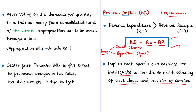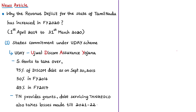One major reason for Tamil Nadu's increased revenue deficit is the UDAY scheme — Ujwal Discom Assurance Yojana. Under this scheme, the state government has taken over the debt and losses of TANGEDCO, the Tamil Nadu Generation and Distribution Corporation Limited. States were asked to take over 75% of their discom debt as on September 30th, 2015, then 50% in 2015-16, and 25% in 2016-17. Tamil Nadu has been providing grants and servicing debt for TANGEDCO, and will absorb its losses through 2021-22.